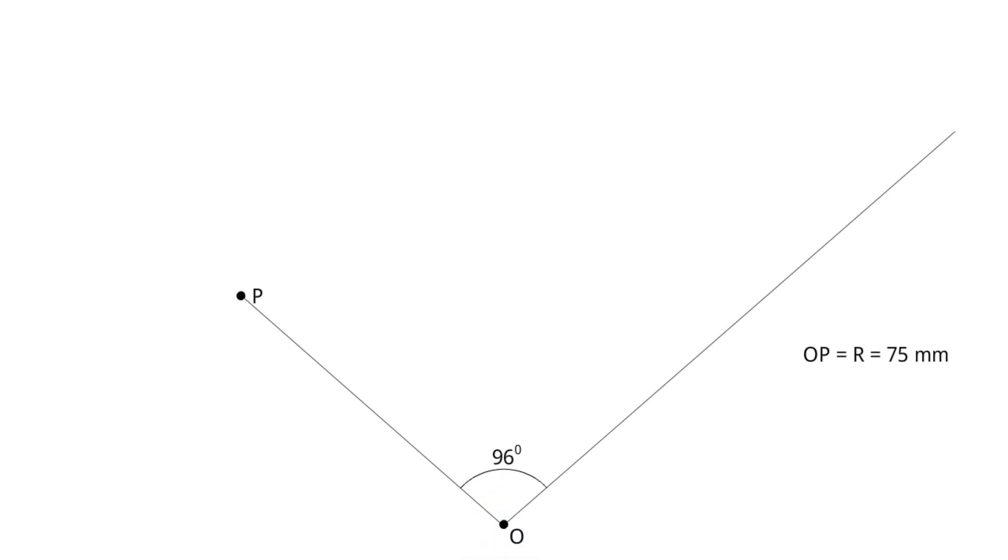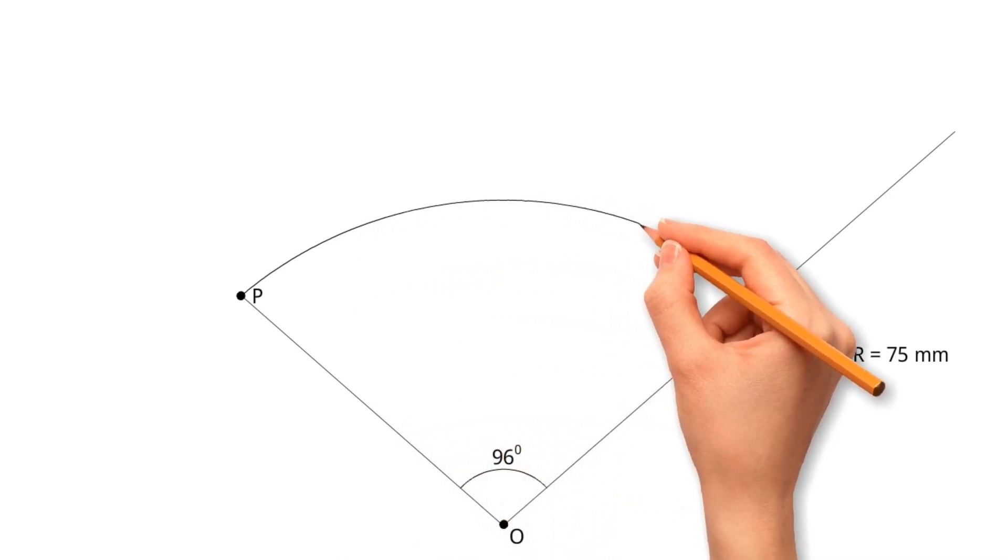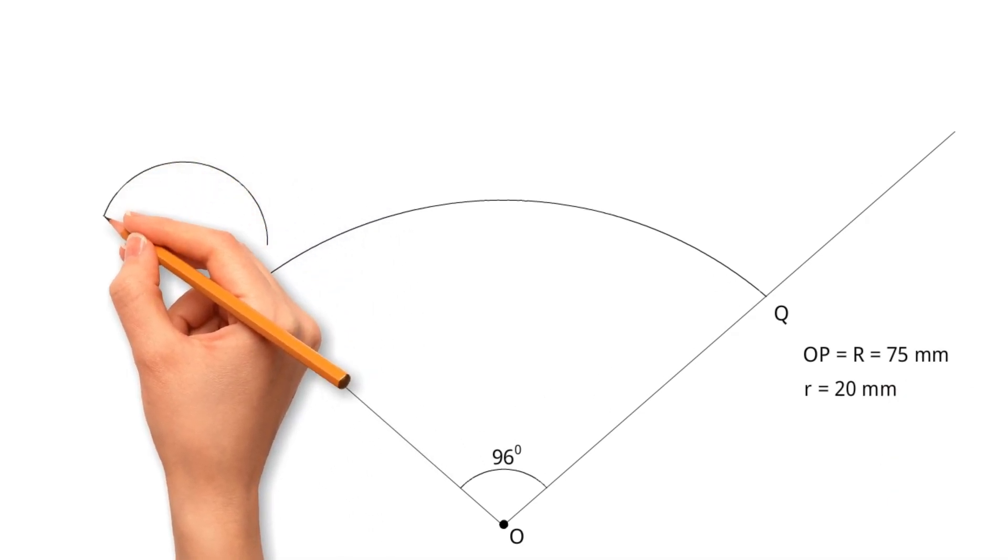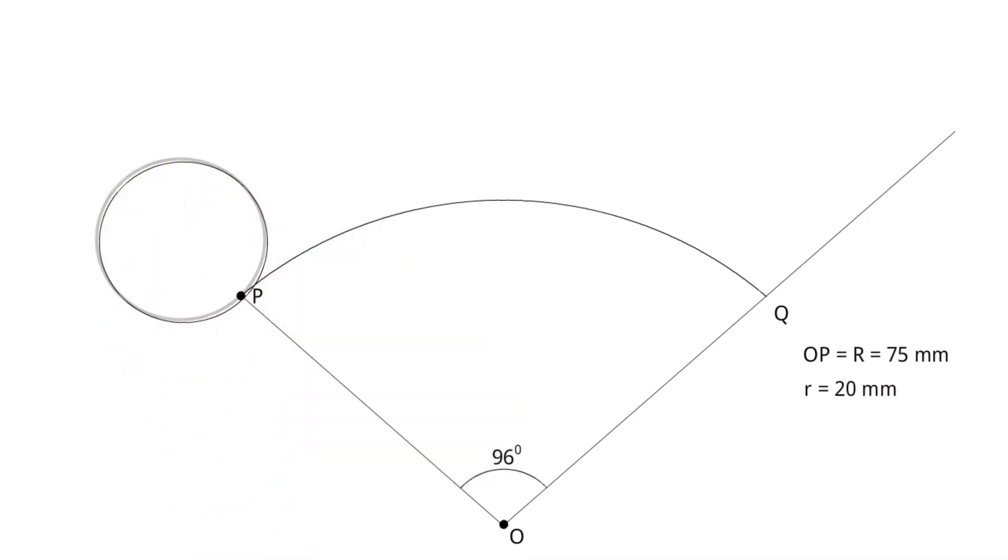Step 3. O is center. Draw an arc of major circle from point P to second line. Locate point Q. Step 4. Radius r equals 20 mm. Draw a small circle above the major circle. Locate center C.